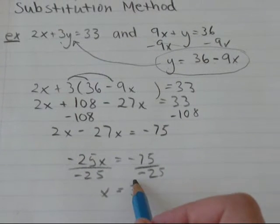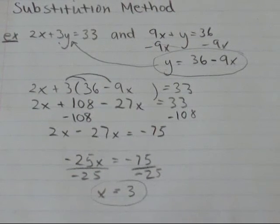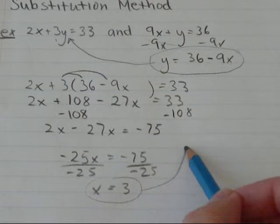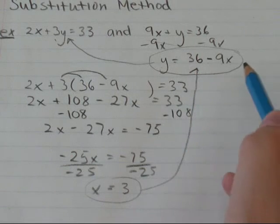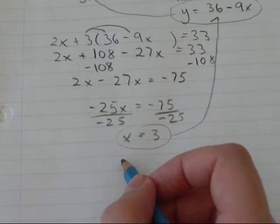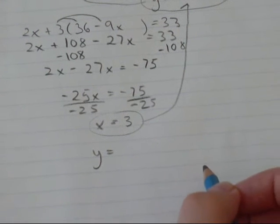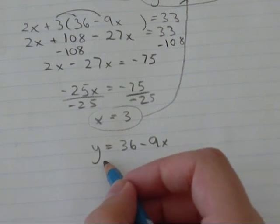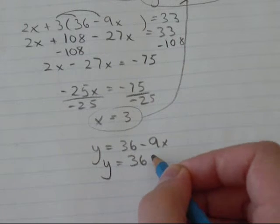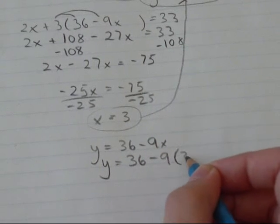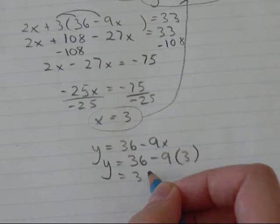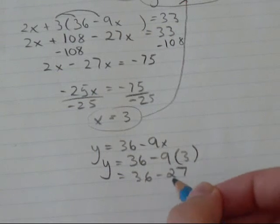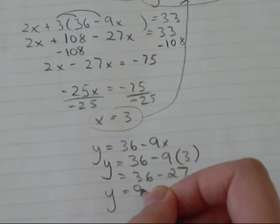So I'm going to plug this x equals 3 back into this equation. So y equals 36 minus 9x. I said x is 3. y equals 36 minus 9 times 3 is 36 minus 27. So y equals 9.